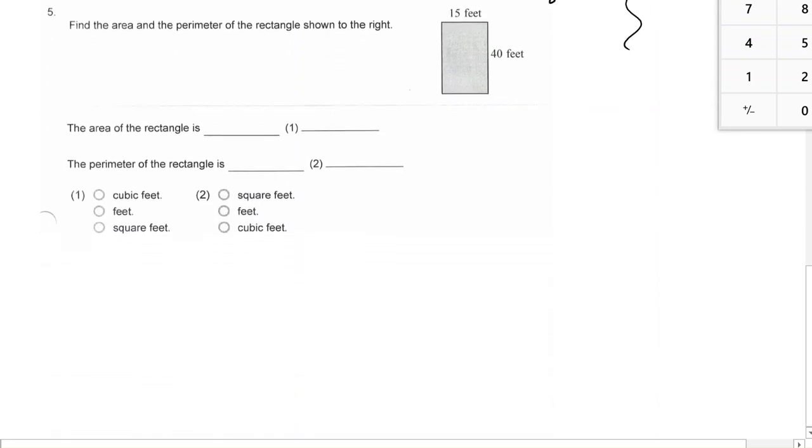We're supposed to find both the area and the perimeter of the rectangle. Area of a rectangle, formula, base, times height. The base, 15 feet, times the height, which is 40 feet.